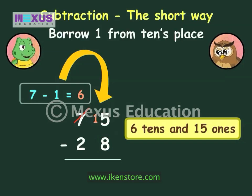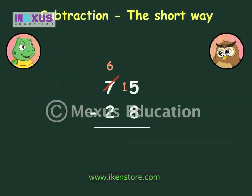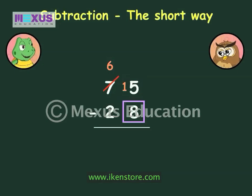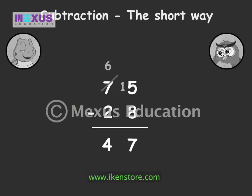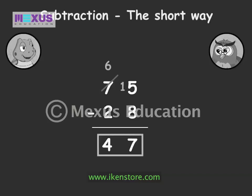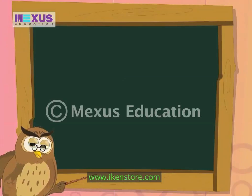Can you solve it now, Max? Yes, sir. At the ones place, 15 minus 8 equals 7. And at the tens place, 6 minus 2 becomes 4. So the answer is 47. Well done, Max.